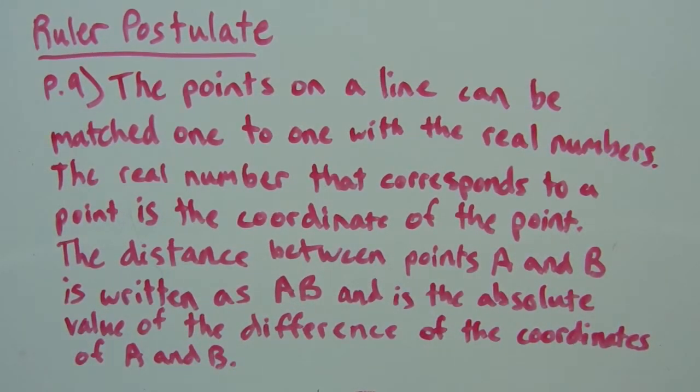The ruler postulate, or in our case P9, says that the points on a line can be matched one to one with the real numbers. And we know this because we can measure a segment.